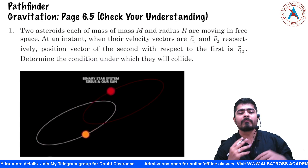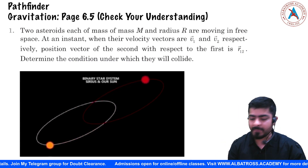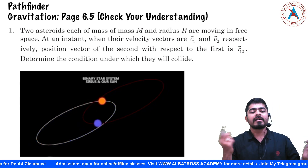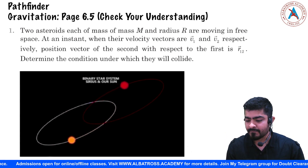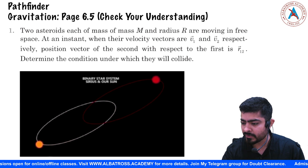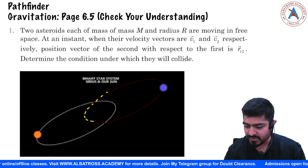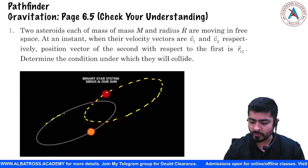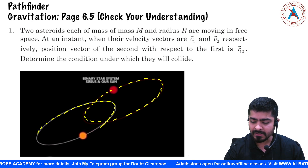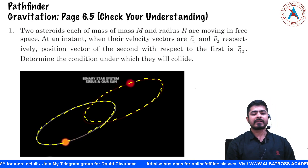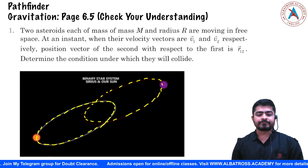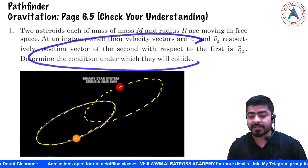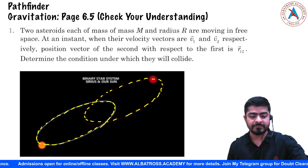This is basically a question of a binary mass system. What exactly is a binary mass system? Here you can see there are two stars which are following elliptical paths under mutual gravitational force — this is what the motion looks like. So the orbit for the two stars looks somewhat like this — both orbits are elliptical. Right now they are following elliptical paths and not colliding, but the question asks: what is the condition under which they will collide?